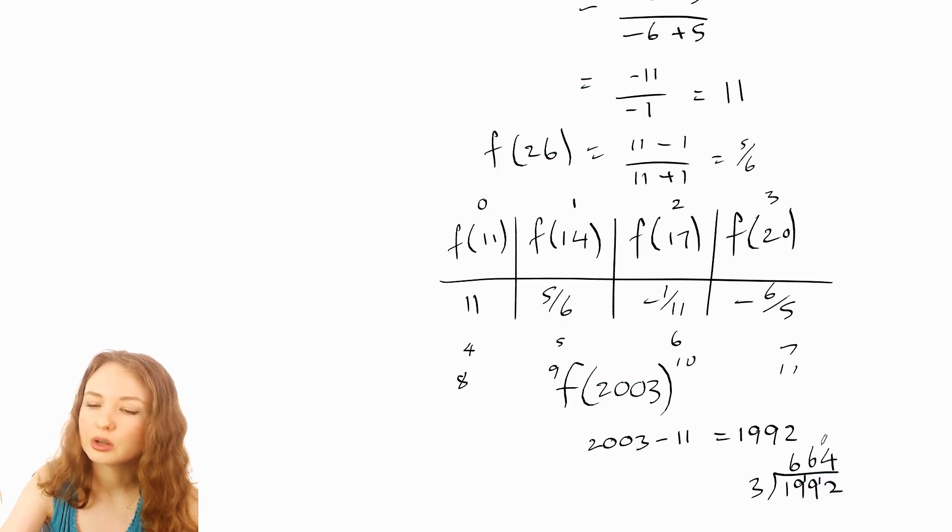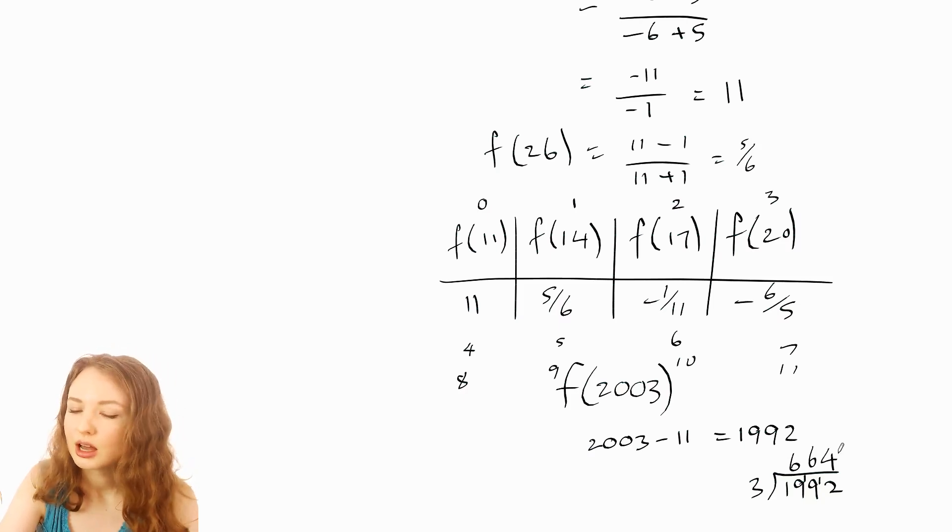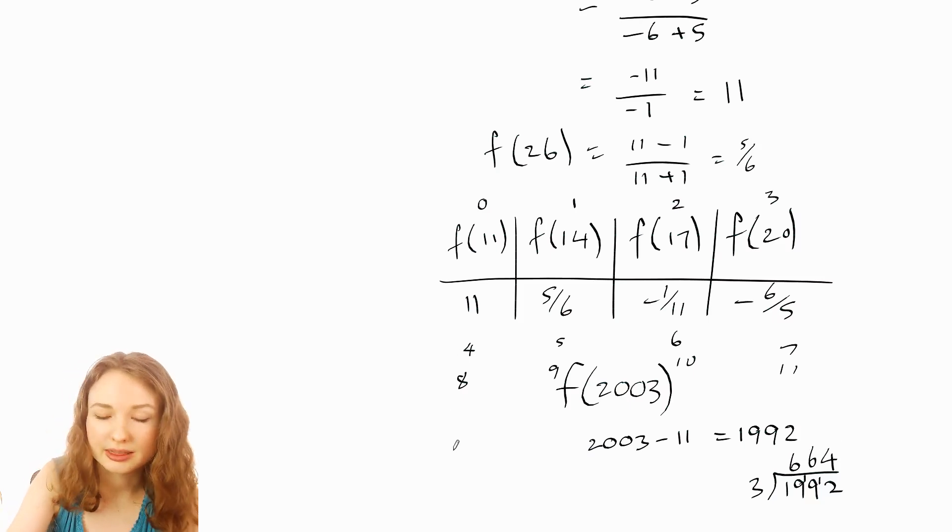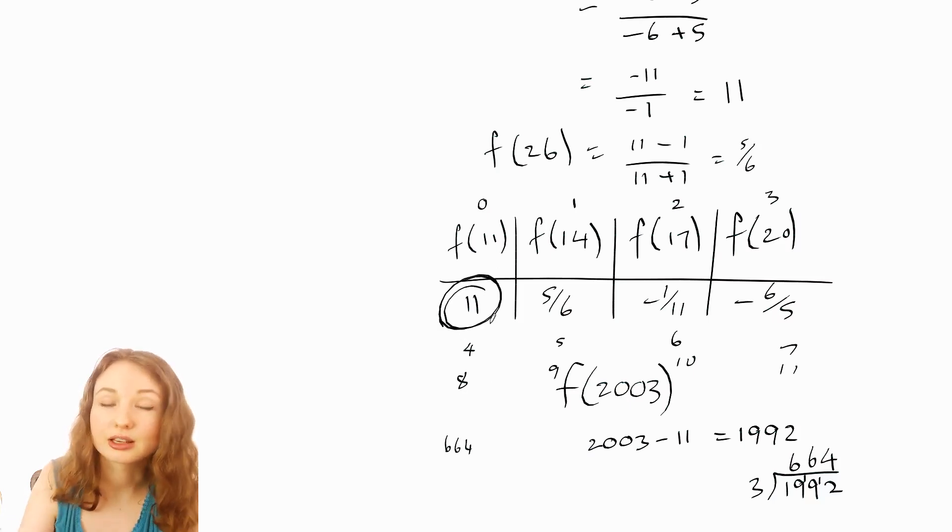So to work out whether that's a multiple of four or not, you can just look at the last two digits of a number because a hundred is divided by four, so we can kind of ignore that bit. So 64 is actually a multiple of four. It's 16 times four. So that means it's going to be in this column with all the other multiples of four, which means that the answer is going to be 11.